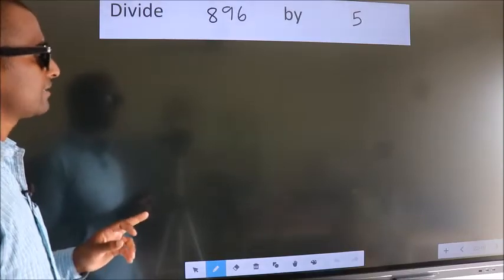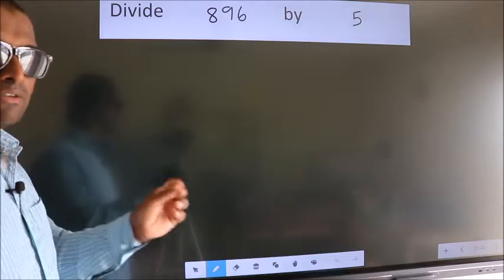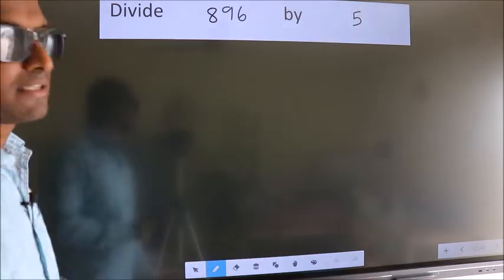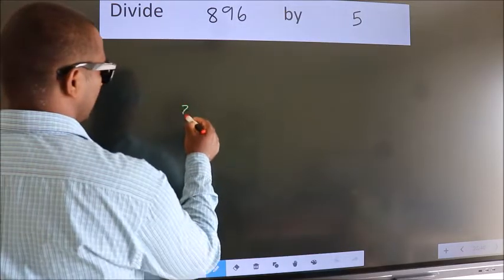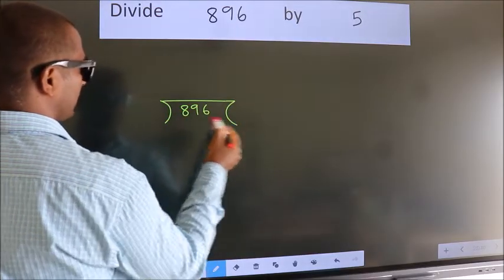Divide 896 by 5. To do this division, we should frame it in this way: 896 here, 5 here.